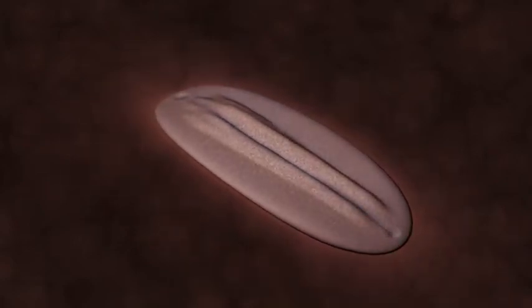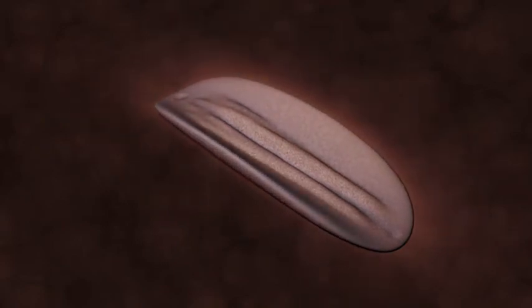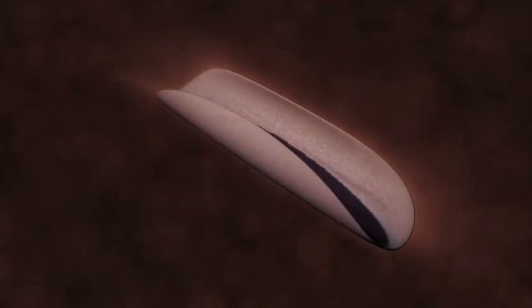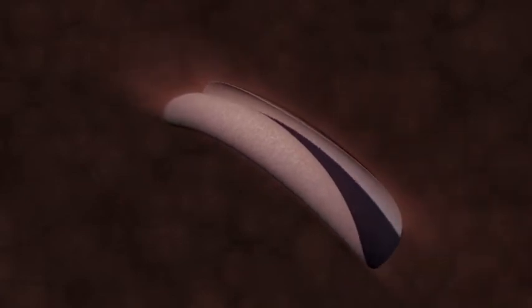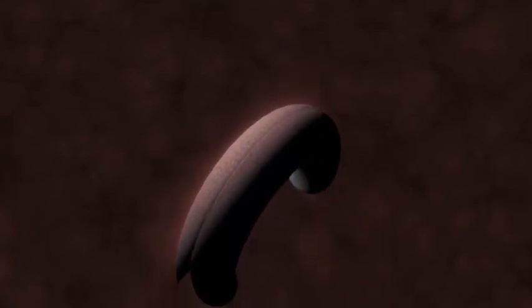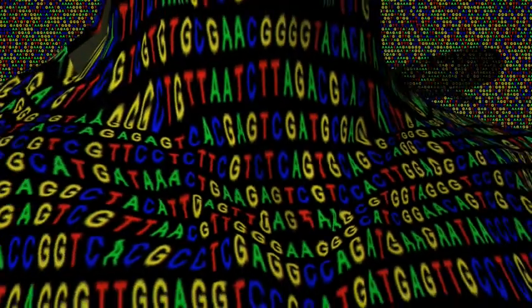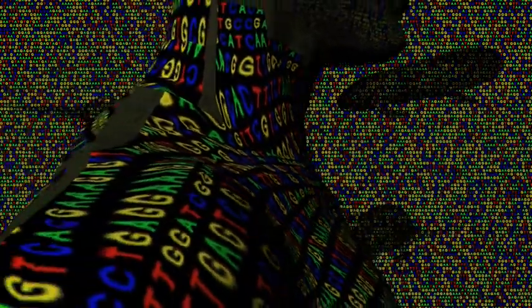A stiffening rod found in embryos of all chordates. In primitive vertebrates, it persists throughout life as the main axial support of the body. But in higher vertebrates, the spinal cord replaces it. But because of our developmental heritage, the spinal cord cannot develop unless the notochord secretes the right chemical signals. The genome includes the information necessary for the embryo to develop properly.